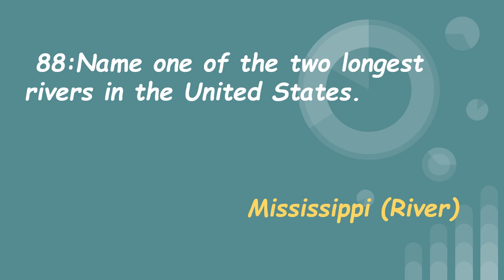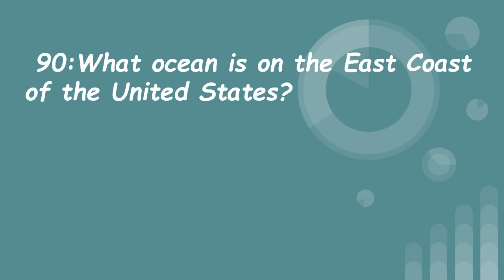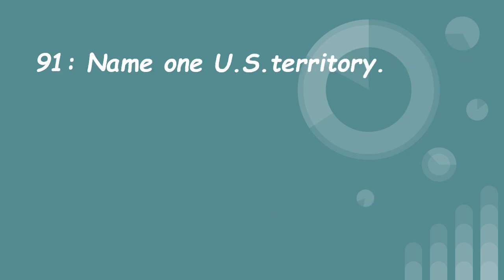89. What ocean is on the west coast of the United States? Pacific. 90. What ocean is on the east coast of the United States? Atlantic. 91. Name one U.S. territory. Guam.